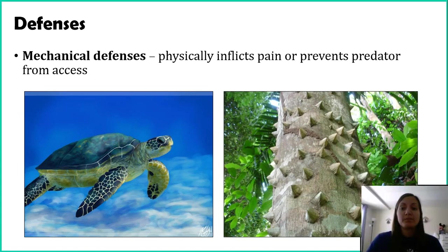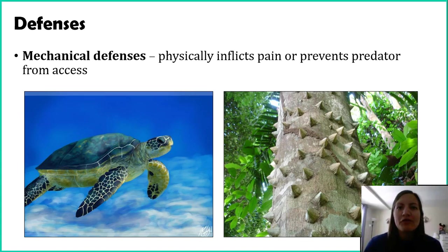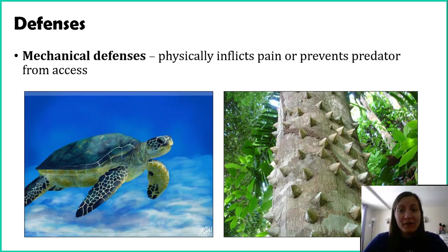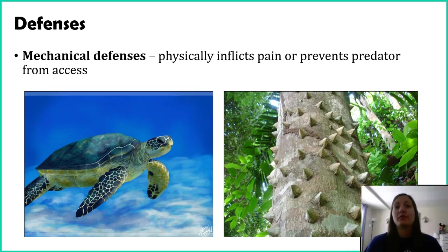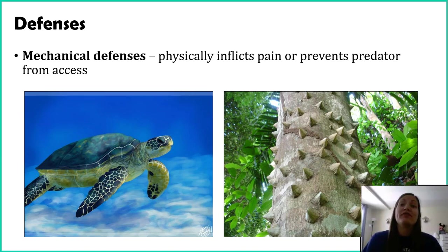Another example, looking at the plant world, is inflicting pain. This tree is called the monkey no climb tree. You're probably familiar with thorns on bushes and plants, but here are thorns on a tree, which is kind of rare compared to standalone plants. They call it the monkey no climb tree, thinking about larger organisms such as monkeys being prevented from getting to the fruit or leaves. This is an example of a physical defense — you see it, you feel it — and the goal is to inflict pain on that predator.